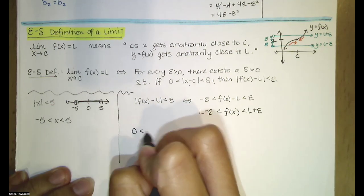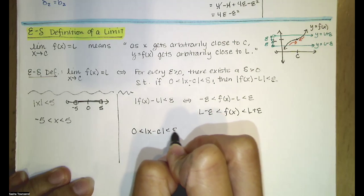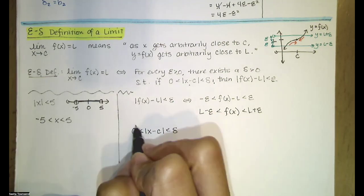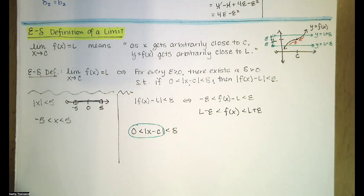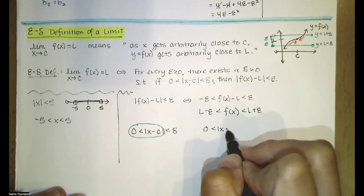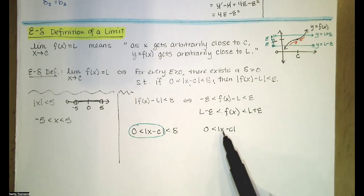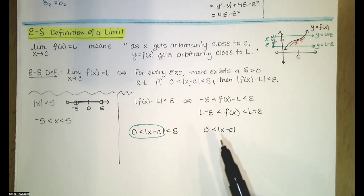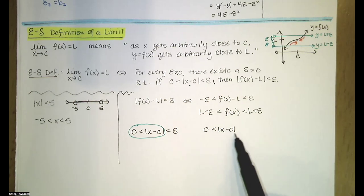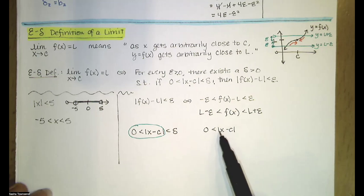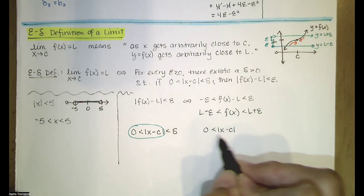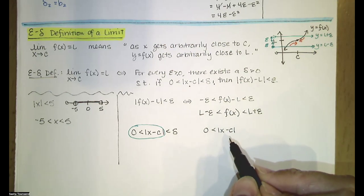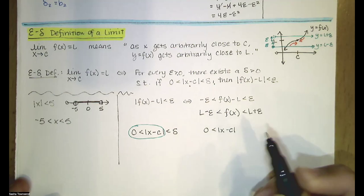Similarly, looking at the compound inequality, there are two parts to examine. The first part — zero is less than the absolute value of x minus c — might seem obvious, but the absolute value is not always greater than zero. If x equals c, we'd have zero less than zero, which is false. So saying the absolute value is strictly positive implies that x is not equal to c.